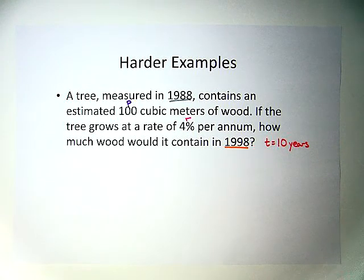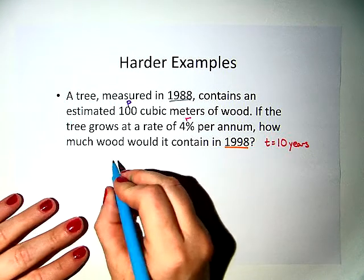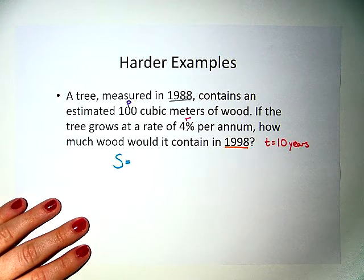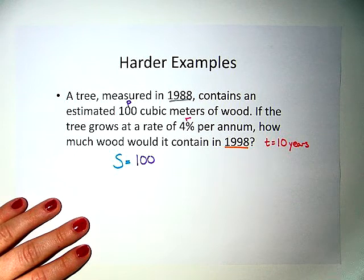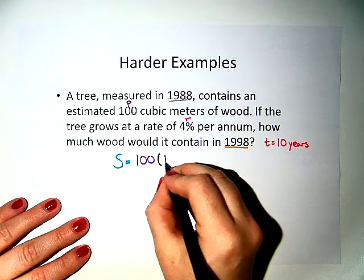So we're going to be using a compound interest formula. The compound interest formula is S equals P times 1 plus or minus I raised to the n power. Okay, so S equals our principal, which is 100, and we're going to say 1 plus.